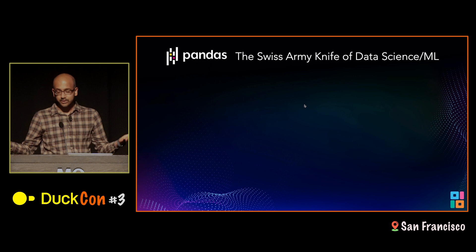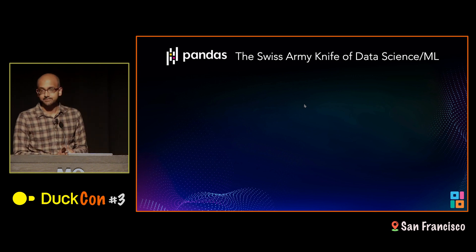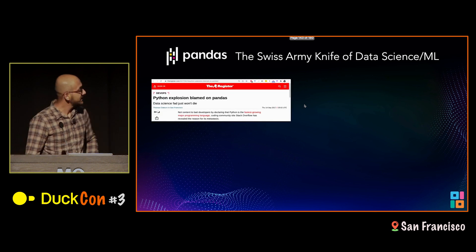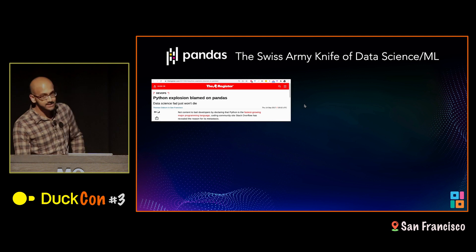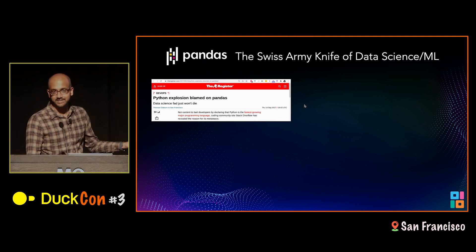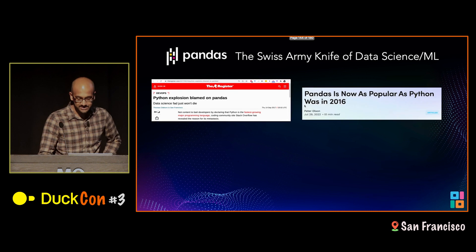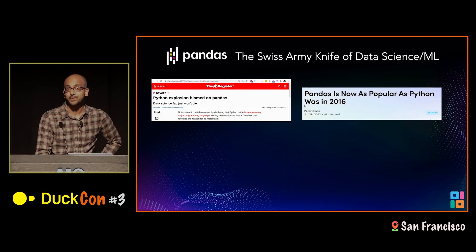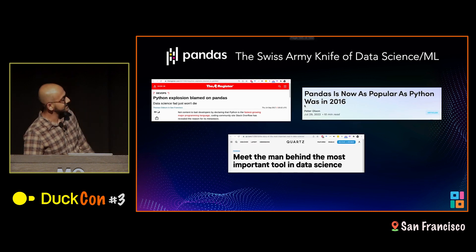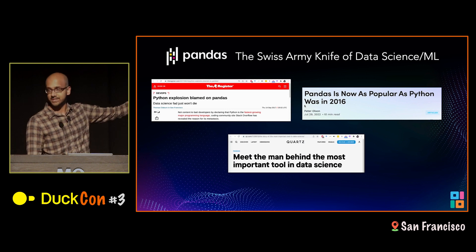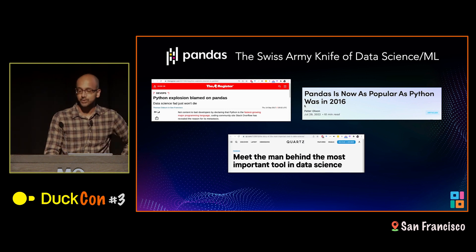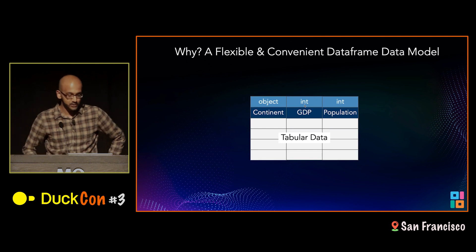Most of you already know about pandas. Pandas is the bread and butter of data science and machine learning. The popularity of Python increasing over time has been attributed to pandas. Pandas is now as popular as Python was a few years ago, and according to at least one publication, it's called the most important tool in data science.